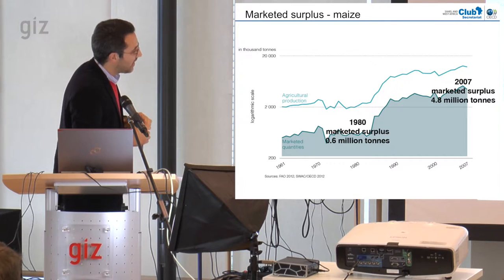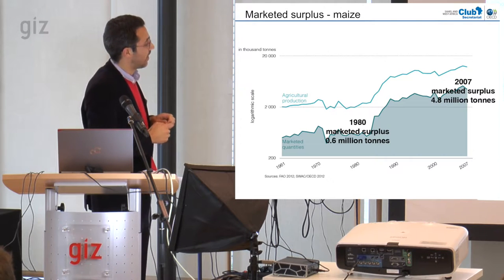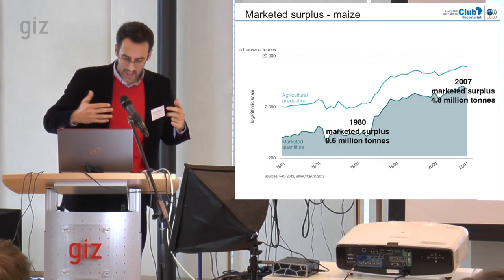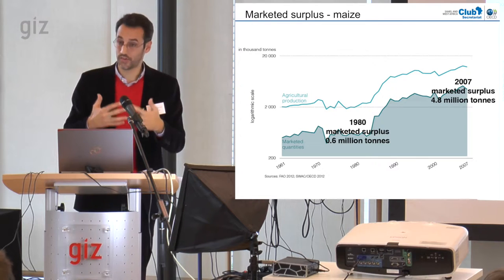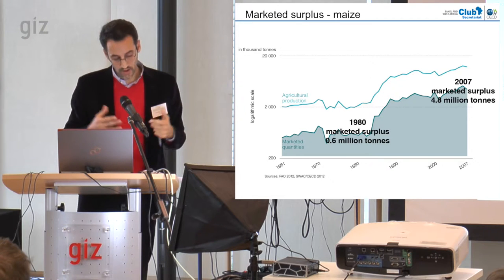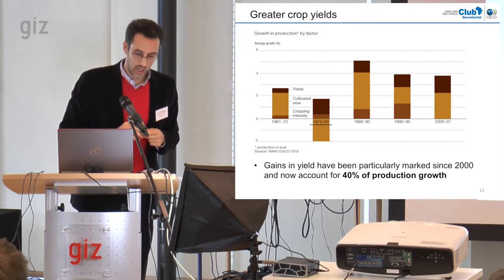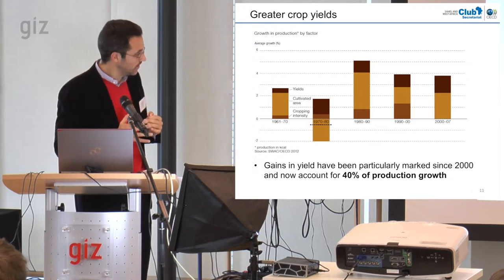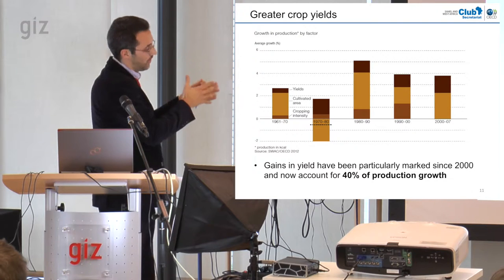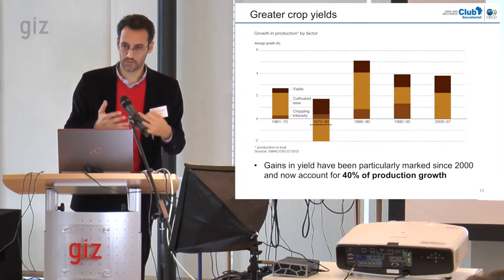A total of 4.8 million tonnes are now put on the market in West Africa, compared to 0.6 million tonnes in the early 1980s. And this growth in production and surplus — with proportionally fewer and fewer producers per consumer — is not just the result of an extension of cultivated area. We estimated that gains in yields accounted for 40% of agricultural production growth, particularly since the early 2000s.